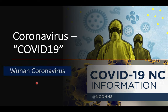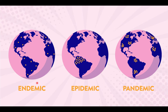COVID-19, also known as the Wuhan coronavirus. Viruses can be either endemic, epidemic, or pandemic. Endemic is when it's dotted around the whole globe in small areas in different countries. Epidemic is localized to one area of a country, and pandemic is when there is widespread transmission of the virus to different parts of the world.